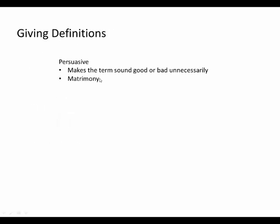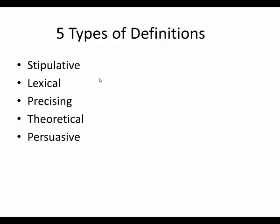It's only a persuasive definition if it makes the term sound good or bad unnecessarily. If the word just actually means something bad, then it's not persuasive to say that. For example, if I'm defining 'evil' and I say evil is maleficence, causing harm, or cruelty — especially a supernatural force that's malevolent — you shouldn't say that's just a persuasive definition trying to make evil sound bad. That's just what the word means. So let's focus on the five types of definitions described in section 2.3, and you should be able to identify what kind of definition you're being given based on what we've discussed here.